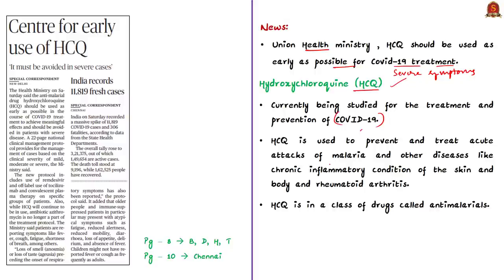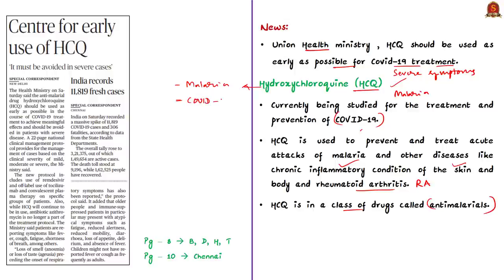Hydroxychloroquine is an anti-malarial drug mainly used to prevent and treat acute attacks of malaria. It is also used to treat other diseases like chronic inflammatory conditions of the skin and body, and rheumatoid arthritis. Hydroxychloroquine is in a class of drugs called anti-malarials; it works by killing the organisms that cause malaria. It is one of the potent drugs for treatment of malaria, but is also believed to have some meaningful benefit for the treatment of COVID-19.